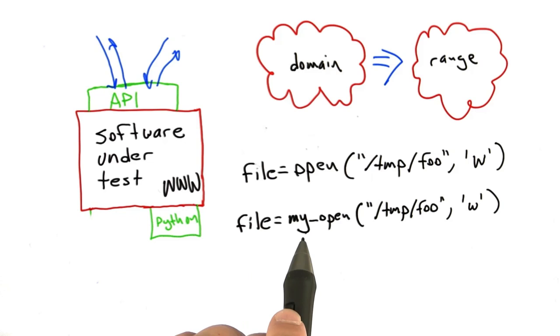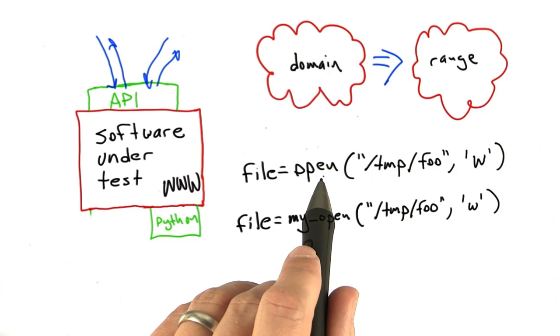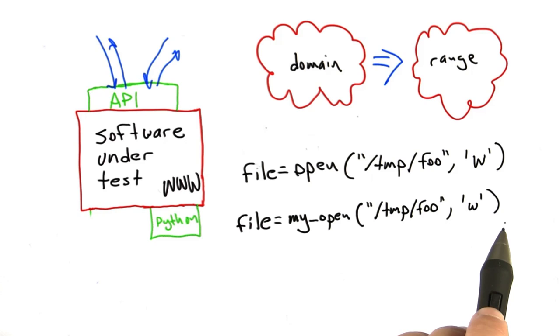So what we can do instead is call a different function, myopen in this case, which has an identical interface to the open call. And in fact, not only is the interface identical, but its implementation is also almost identical. So most of the time, what myopen is going to do is simply call open.